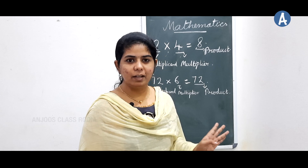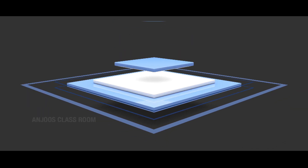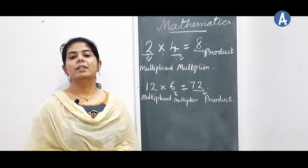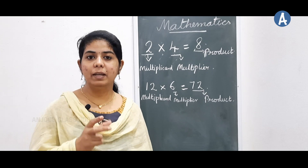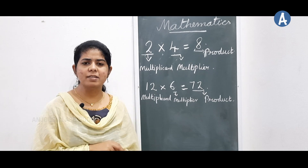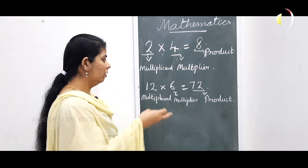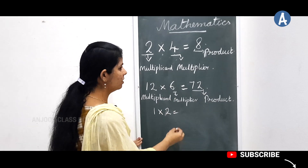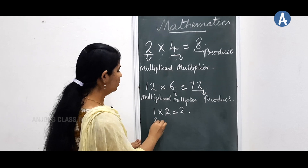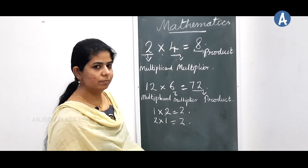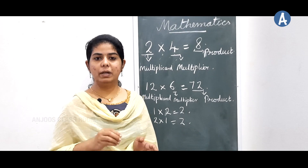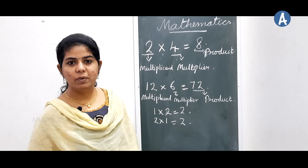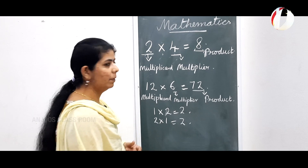Now, you know that when you multiply any number with 0, the product is 0. And whenever you multiply a number with 1 — for example, 1 into 2 — the answer is 2, or 2 into 1 is also 2. That means whenever you multiply a number by 1, the product will always be that same number. These are some important things to remember.